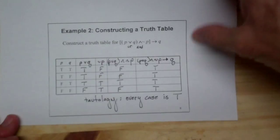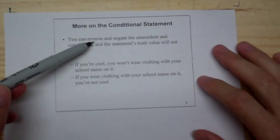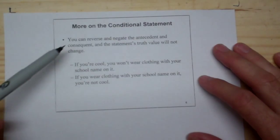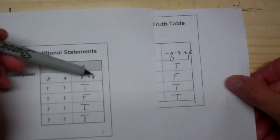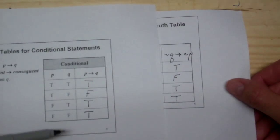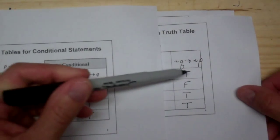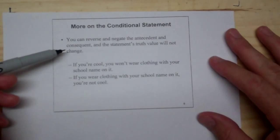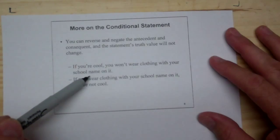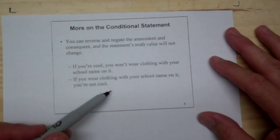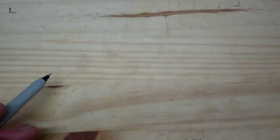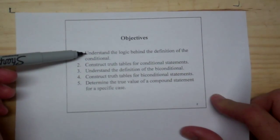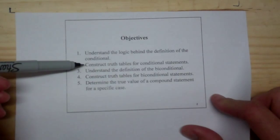This is just how we construct truth tables. You can reverse and negate the antecedent and the consequent and the statement's truth value will not change — that's what we did in the first example. I changed the antecedent and the consequent and negated them, and ended up with exactly the same truth table. So that takes care of objectives one and two: we understand the logic behind the definition and we've constructed truth tables for the conditional statement.